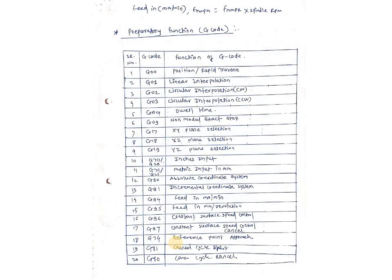G02 is basically used for circular interpolation in the clockwise direction. Suppose I want to rotate my tool in a circular manner with clockwise direction, so we have to use G02 code. Similarly, G03 is also used for circular interpolation but in the anti-clockwise, that is counter-clockwise direction. G04 is used for dwell time — meaning no operation time. Next, G09 is used for non-modal exact stop — it does not exactly stop the program, just a non-modal exact stop whenever required, we use G09.